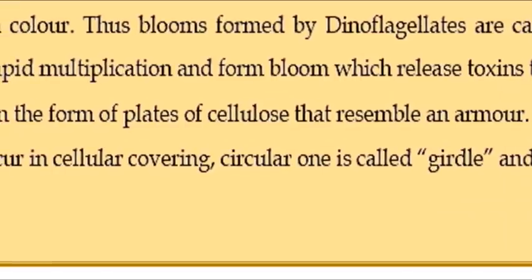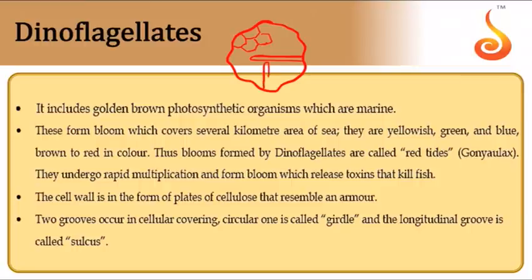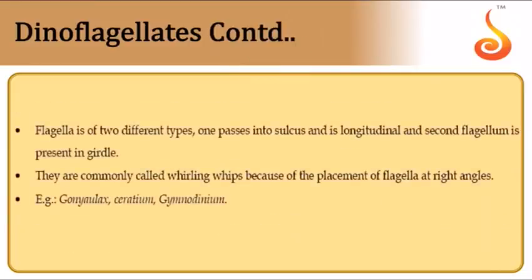Dinoflagellates have a heavily armored cell wall with cellulose plates tightly fitted together. They have a circular horizontal groove called a girdle and a vertical groove called a sulcus, from which flagella emerge at right angles to each other. Some reproduce rapidly to produce red tides — for example Gonyaulax — and some are poisonous to fish. They are called whirling whips. Example: Gymnodinium.